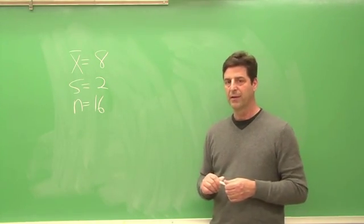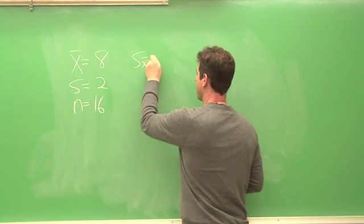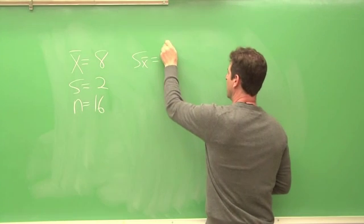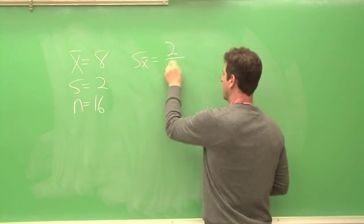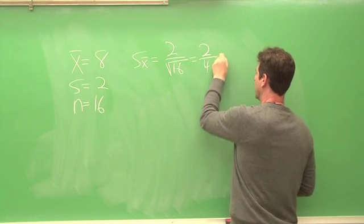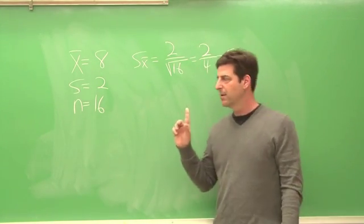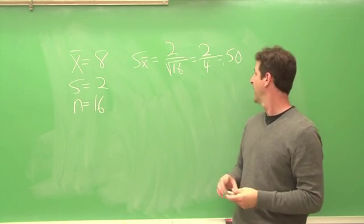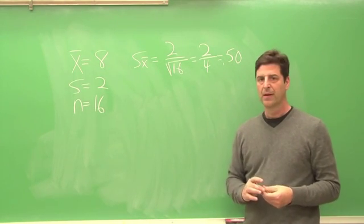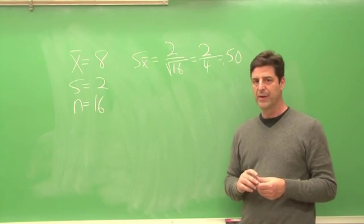Let's start by calculating the standard error of the mean. So the standard error of the mean for this sample is 0.50, and now we've got two of the three pieces that we need.